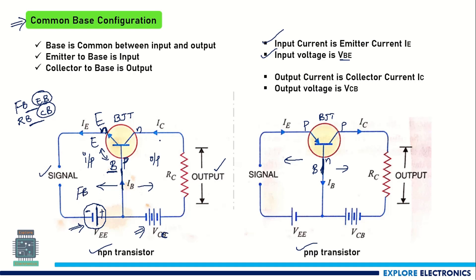Similarly, the collector-base junction must be reverse biased. The collector is N-type and the base is P-type, so the positive end of VCC is connected to the N-type and the negative end to the P-type — this makes it reverse biased. This satisfies the criteria of forward-biased and reverse-biased conditions for these two junctions.